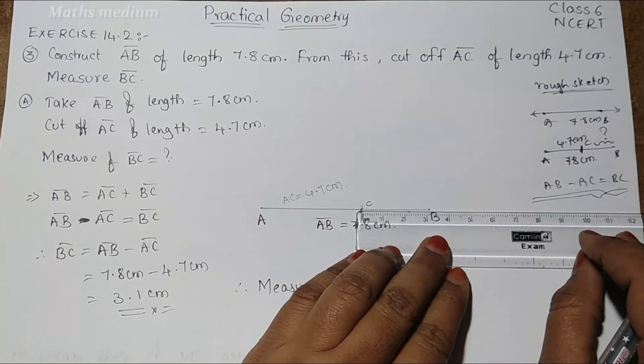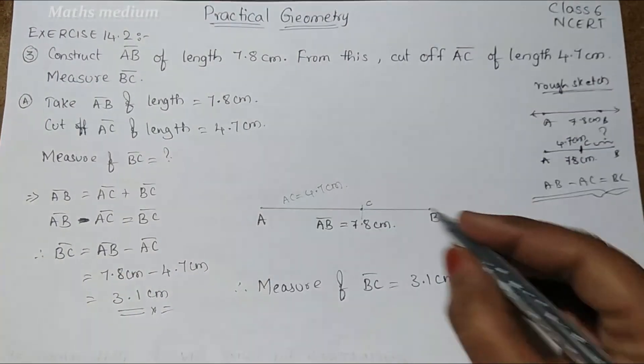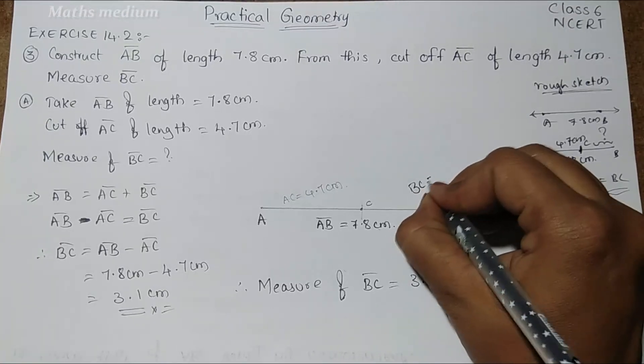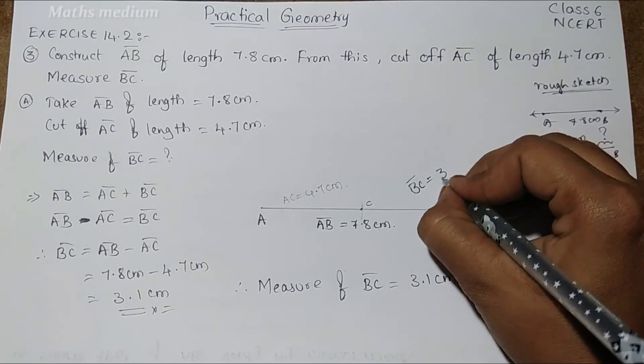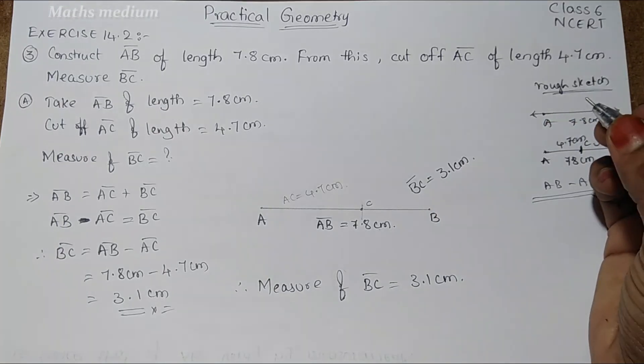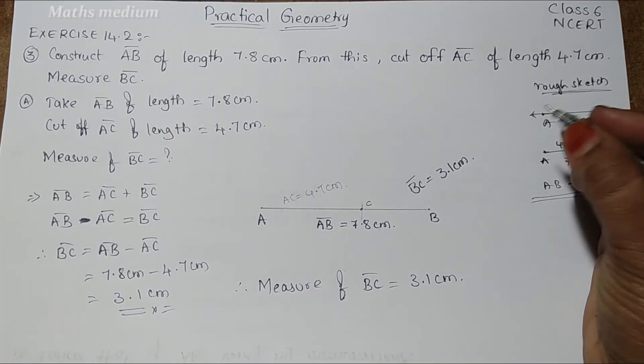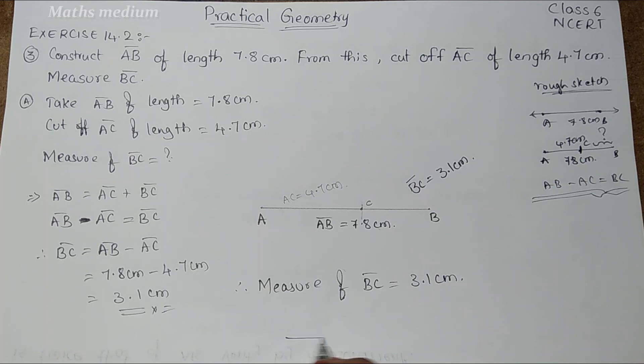Therefore, measure of BC bar is equal to 3.1 cm. This is about this session. I hope you understand. If you have any doubts, comment on comment section. Please click like button, share my videos and subscribe my channel. Thank you.